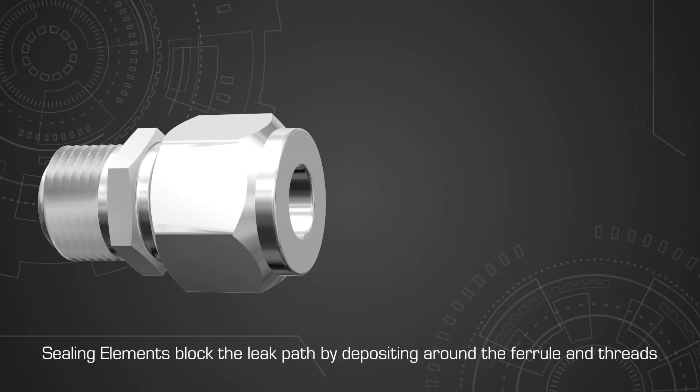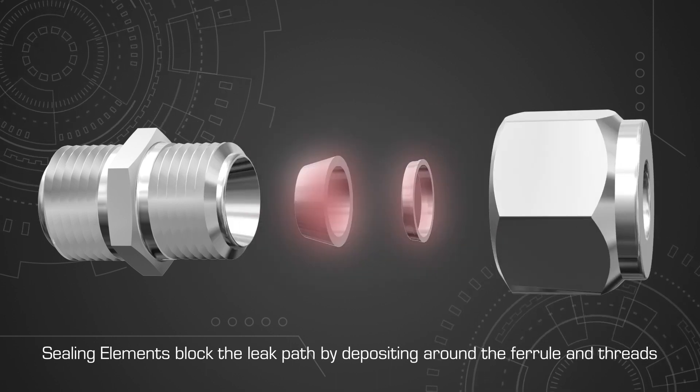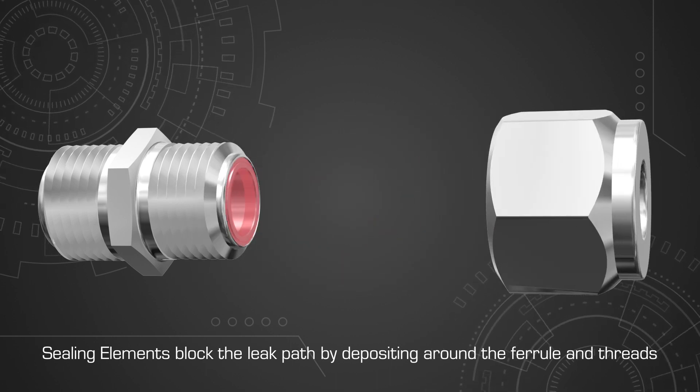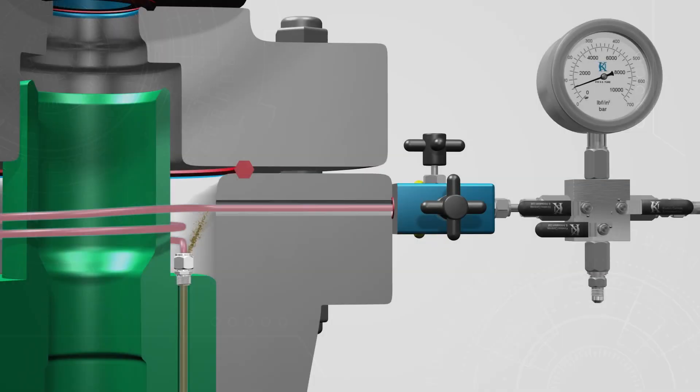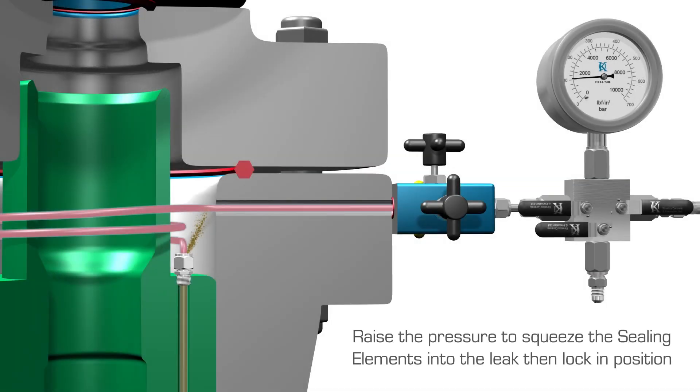Here is a close-up of the compression fitting. The gel creates a low pressure isolation initially, then the sealing elements embedded in the gel block the leak path by depositing around the ferrule and threads. Raise the pressure to squeeze the sealing elements into the leak path. This creates the isolation.